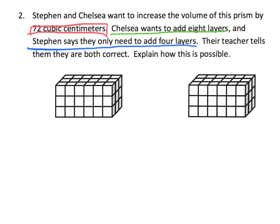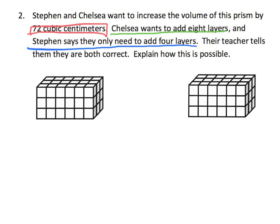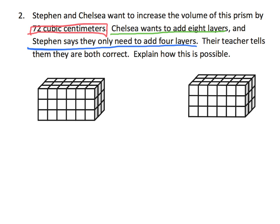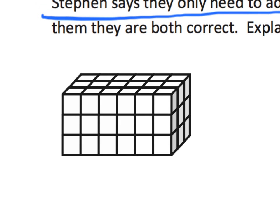Let's start with Stephen. I'm going to take Stephen's rectangular prism right here. Stephen says we can add four layers to get 72. If we look at this thing and look at the layers like a wedding cake, there are three layers. Let's look at the top layer. In the top layer we can see: 1, 2, 3, 4, 5, 6, 7, 8, 9, 10, 11, 12, 13, 14, 15, 16, 17, 18 — so we have 18 cubes in this top layer.